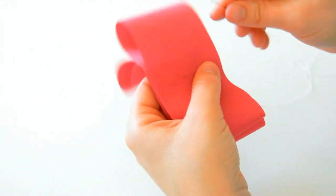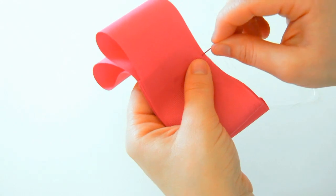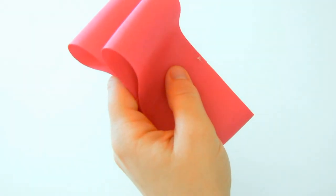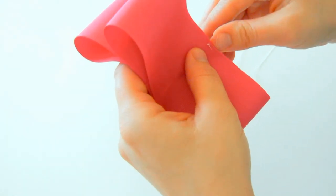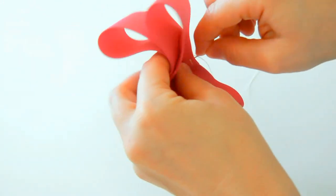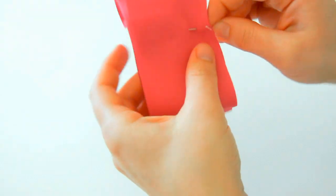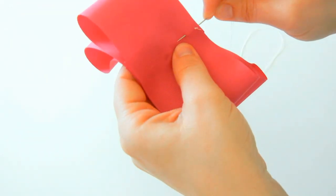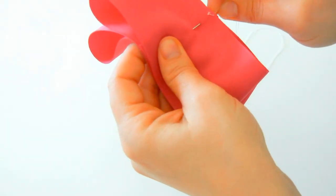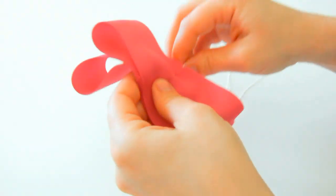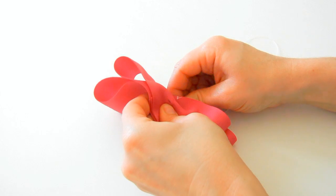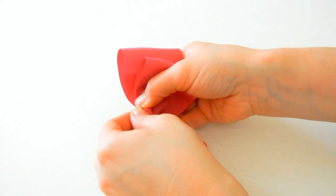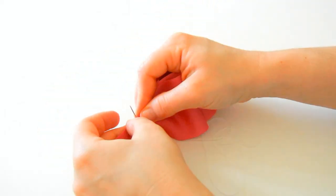You have your center of your bow and you go down very close to the edge, and then come up and then down. Just make sure that it's going to be even, and then just pull your needle through.